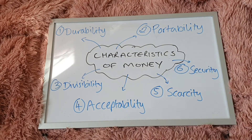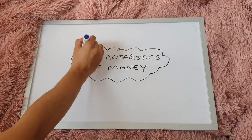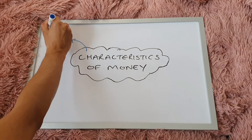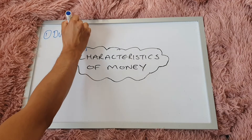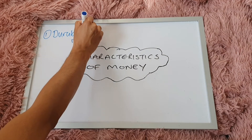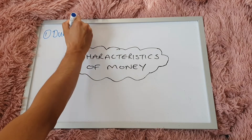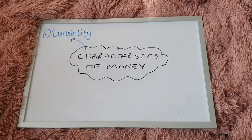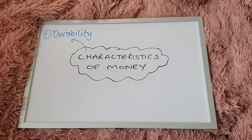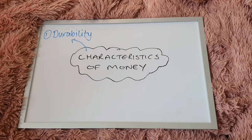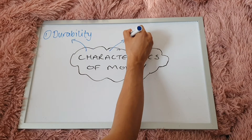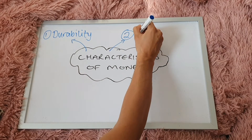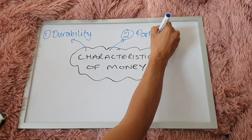Hey everyone, so characteristics of money — there are six characteristics of money, and one of the core characteristics is that money should be durable. Durability is what we are talking about here. Money must be able to withstand being used repetitively. Everyone is using money on a daily basis. Imagine if your money ripped or broke when you were using it — that would be severely impractical. It has to be durable as a core characteristic of money.